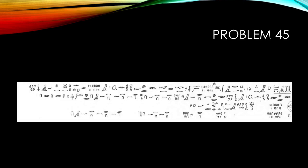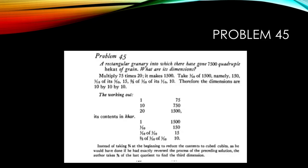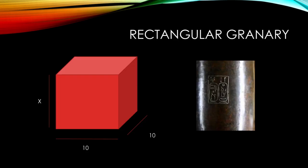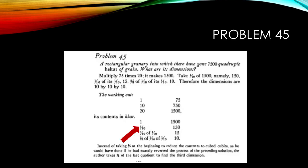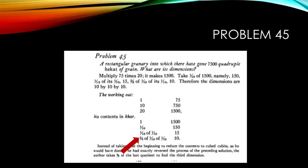So now let's analyze the solution. First we have to look at our conversion table. We are starting with hundreds of quadruple hekat. We need to go from that to khar and we need for that to multiply by 20. Then we know that the width and the length are 10 for each. So we divide by 10 then by 10 another time. And that's how we get to 15. And since we have the dimensions in khar and we want to go into cubits we multiply by two-thirds. So the dimensions are 10 times 10 times 10 which means that it's a cube.